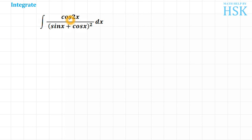In this question we have to integrate cos 2x upon sine x plus cos x whole square. This question is a typical substitution problem and let us see how we are going to solve it.